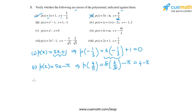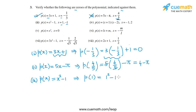Now the third part: p(x) = x² - 1, and I have to find out whether 1 and -1 are zeros. Substituting: p(1) = 1² - 1 = 0. And p(-1) = (-1)² - 1 = 1 - 1 = 0.